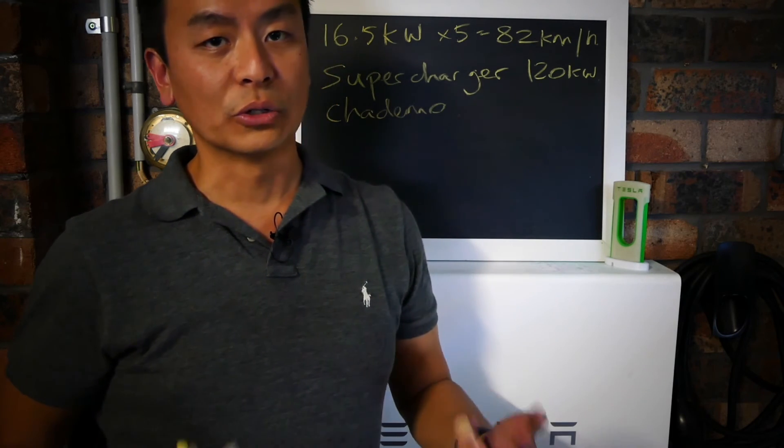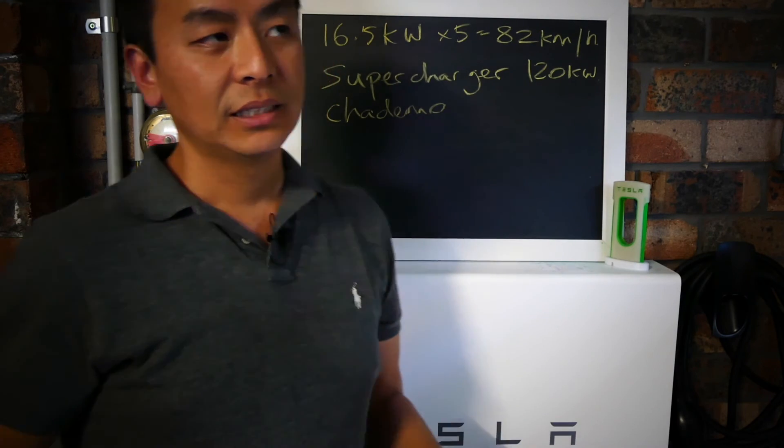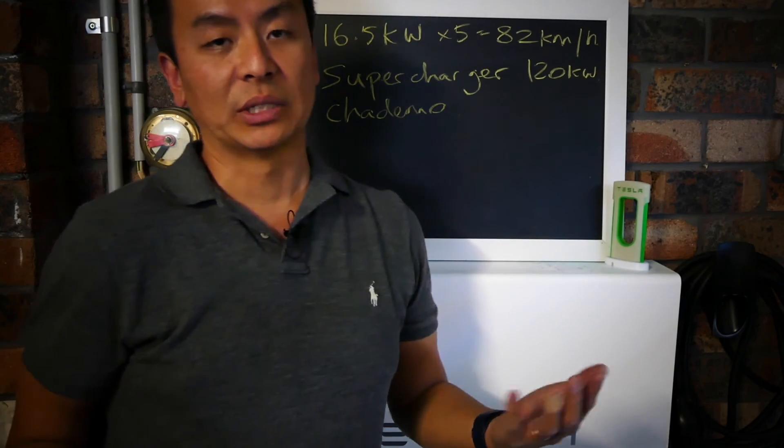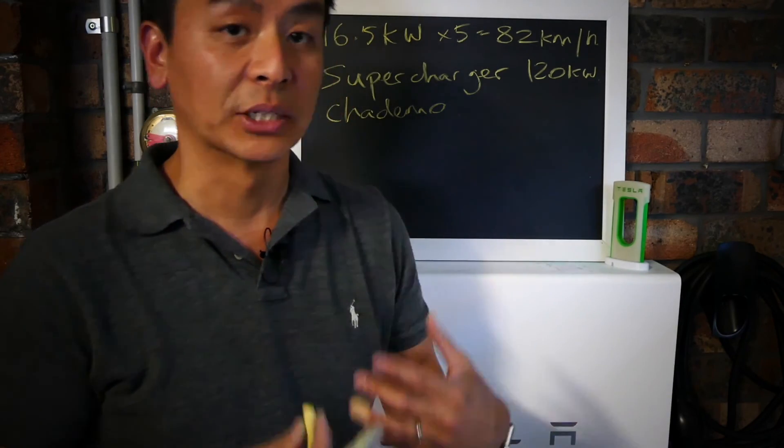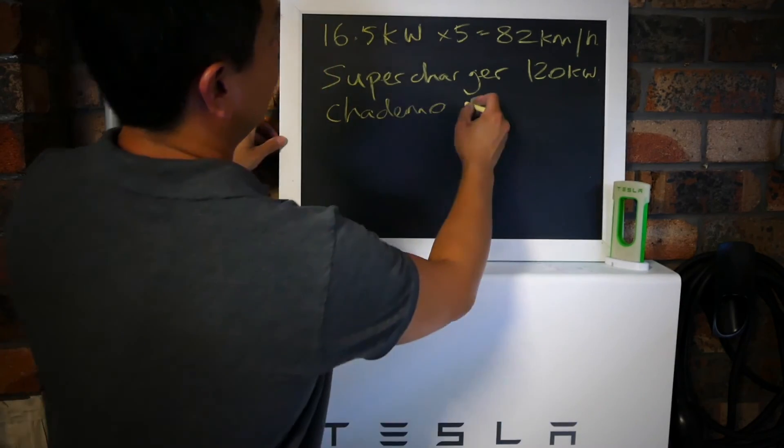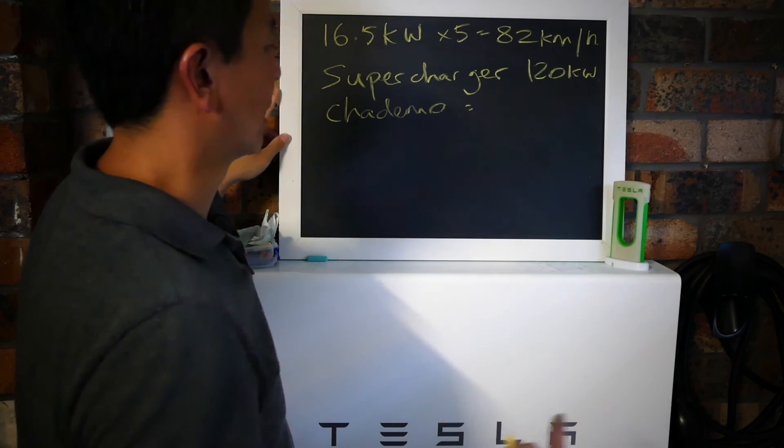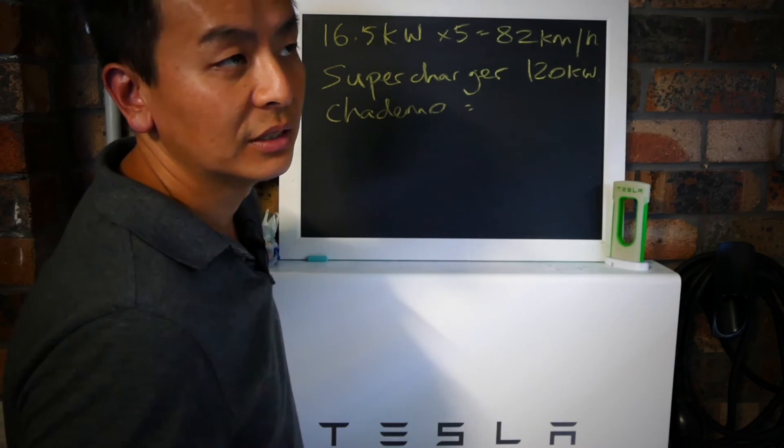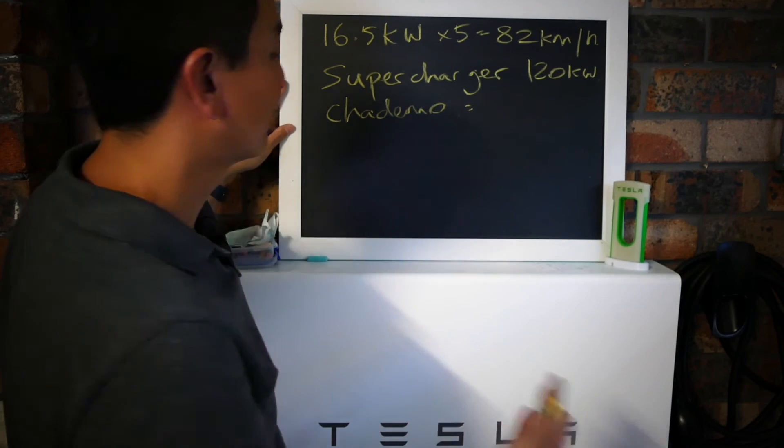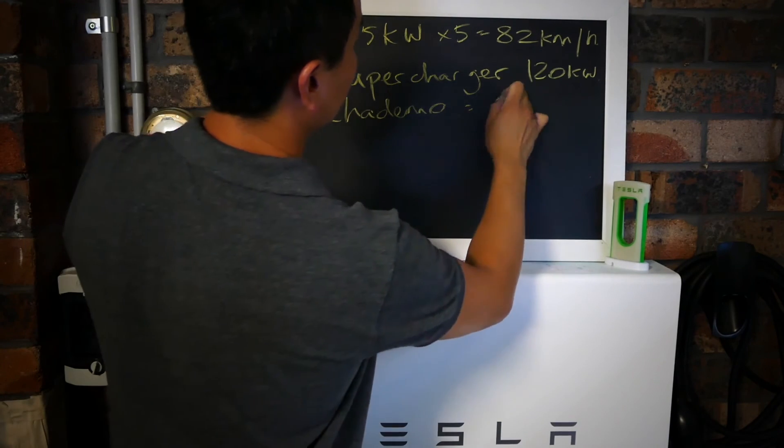CHAdeMO ika ga desu ka - I guess the pun being that it takes so long to charge an EV that you might as well have some tea at the same time. But I think the actual term comes from 'charge to move.' You get 50 kilowatts from that.